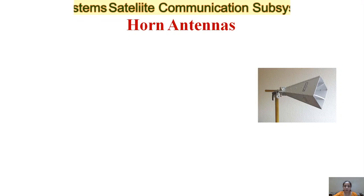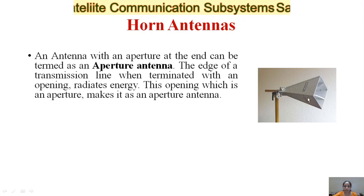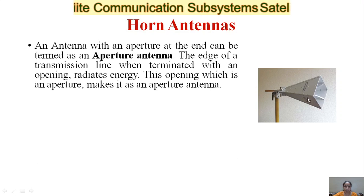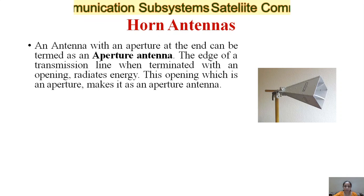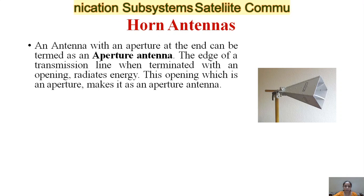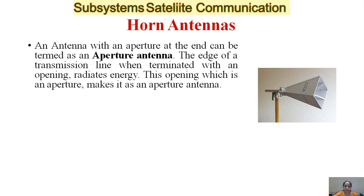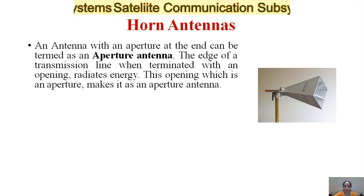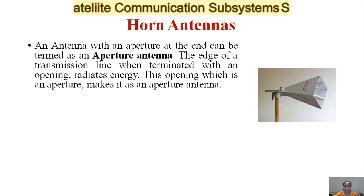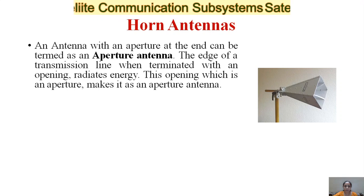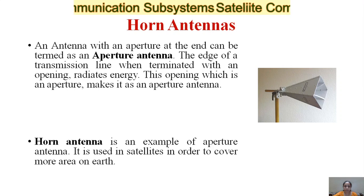The second type is the horn antenna. As it looks like a horn, it is called a horn antenna. An antenna with an aperture at the end can be termed an aperture antenna. When the edge of a transmission line is terminated with an opening, it radiates energy. This opening, which acts as an aperture, makes it an aperture antenna.